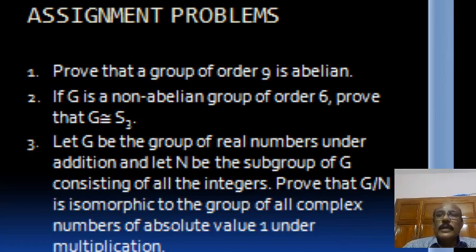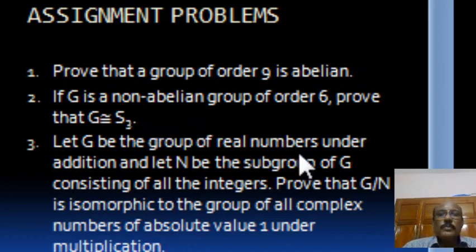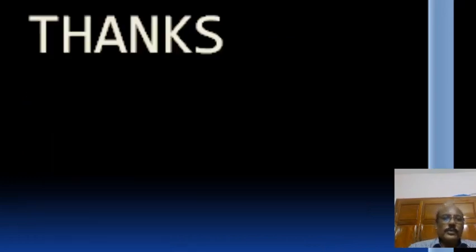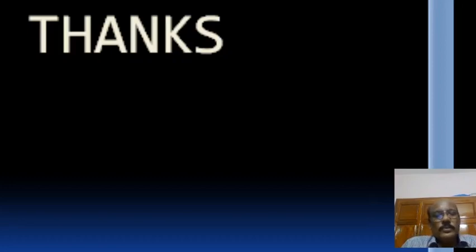Now here are some assignment problems. Prove that a group of order 9 is abelian. If G is a non-abelian group of order 6, prove that G is isomorphic to S3. Let G be the group of real numbers under addition and let N be the subgroup of G consisting of all integers; prove that G/N is isomorphic to the group of all complex numbers of absolute value 1 under multiplication. In this presentation we have proved two main theorems, namely Cauchy's theorem for abelian groups and Sylow's theorem for abelian groups. Thank you.